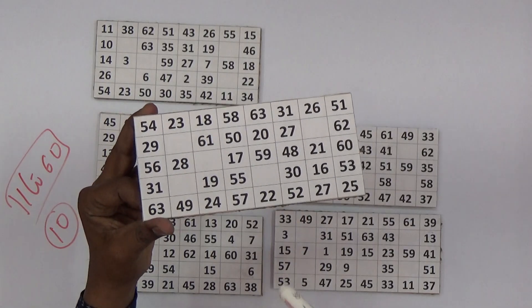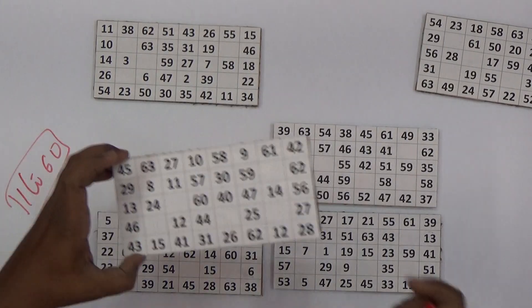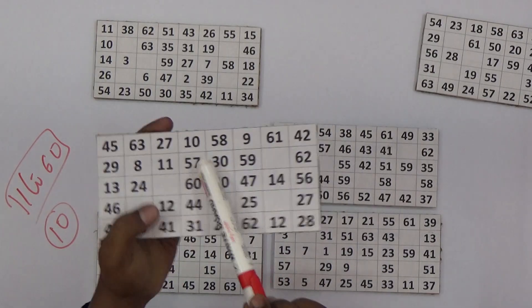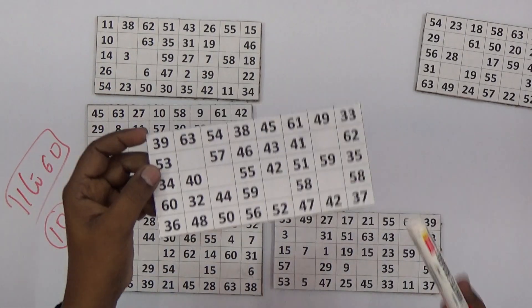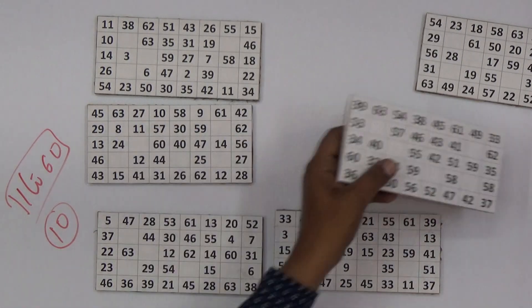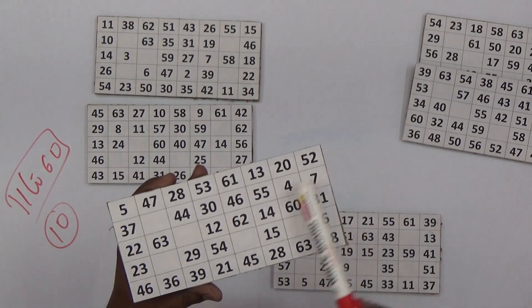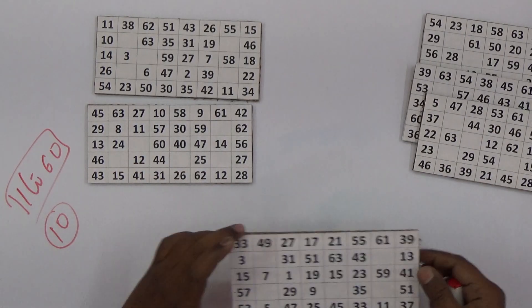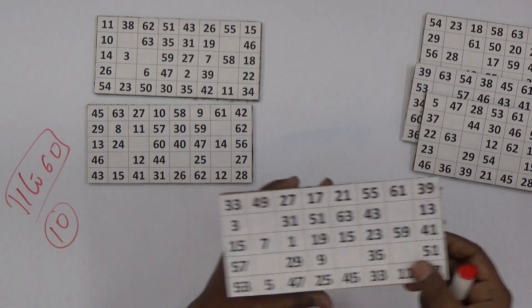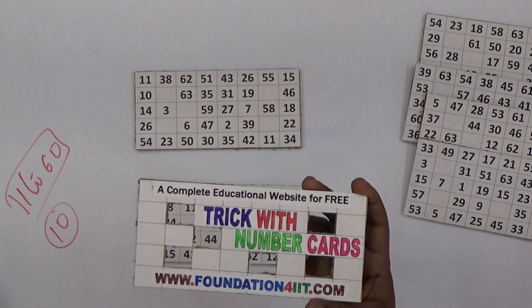Now keep this aside. In this card number 10 is not there. In this card number 10 is not there, keep this aside and see the next third card. In this card number 10 is there. In this there is no 10. Now keep this aside. In the next card number 10 is not there, and this last card also, there is no number 10.